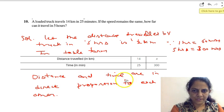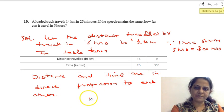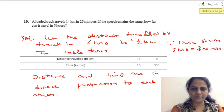So now, distance and time are in direct proportion to each other because speed is given as same. If distance increases, time will also increase. If distance decreases, time will also decrease. So they are in direct proportion to each other.